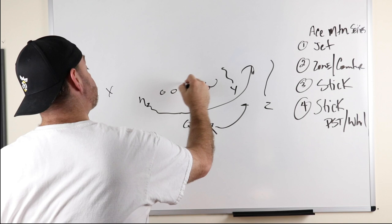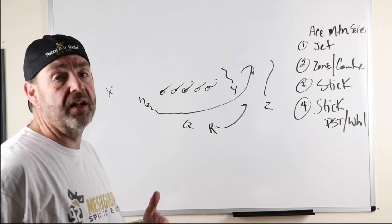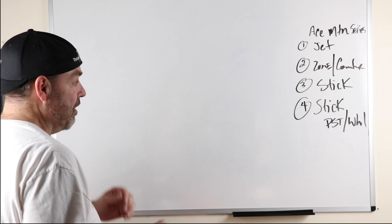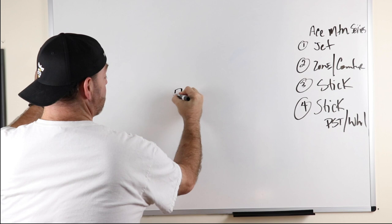You know, with the jet, and you can also come back with Z and go this way, just put it on the other side. So that's kind of our jet package. We've talked about jet in the past, and then of course we'll fake that jet and then run our inside zone and our counter off of that.